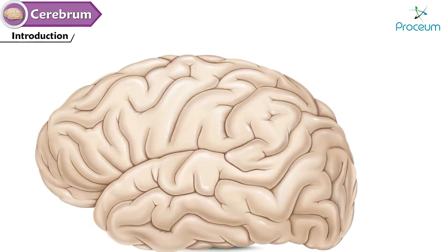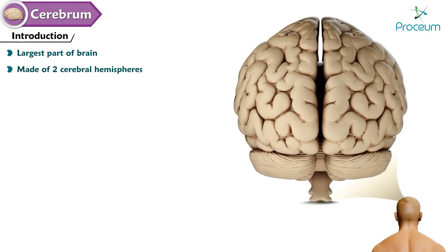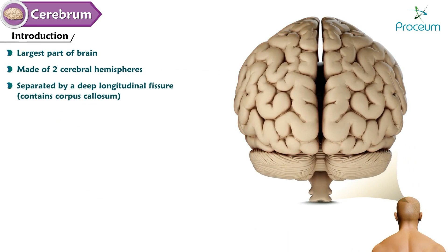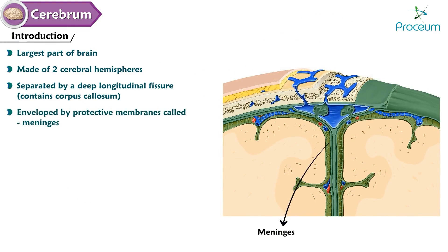The cerebrum is the largest part of the brain, made of two cerebral hemispheres — right and left — which are separated by a deep longitudinal fissure containing the corpus callosum. It is enveloped by protective membranes called meninges.